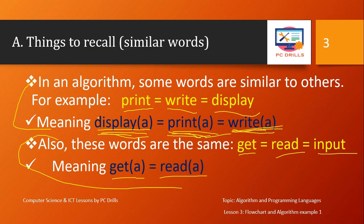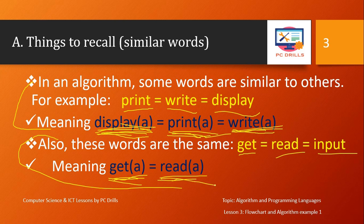If you write 'display: how are you' and you wish the user to respond, you need to use get or read to take something the user will input into your program. For example, when calculating the sum of two numbers, you display 'input number one' and then use get or read to take number one from the user, then do the same for number two.